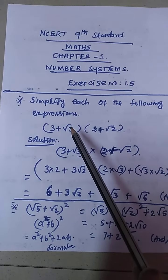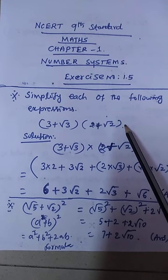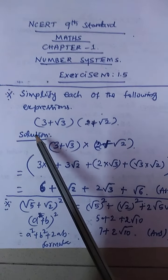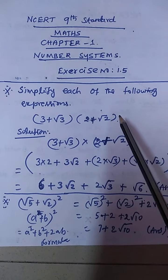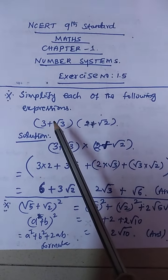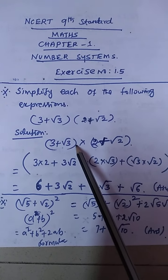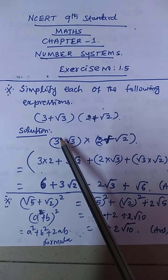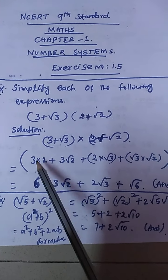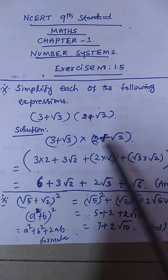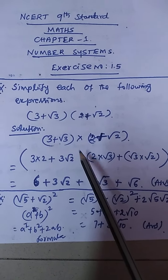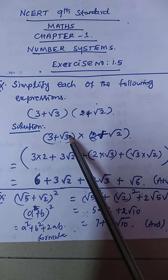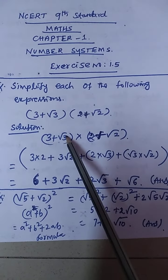The first expression is (3 + √3) × (2 + √2). We have to write the given sum: 3 plus root 3, into 2 plus root 2. Multiplication means the first term into all the terms: 3 into 2, plus 3 into root 2, plus root 3 into 2.